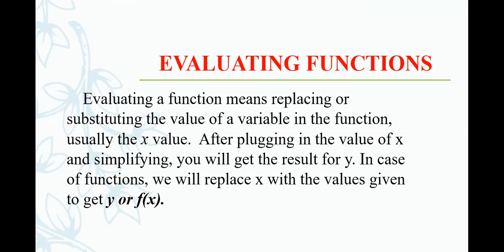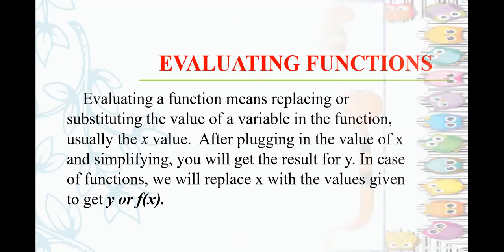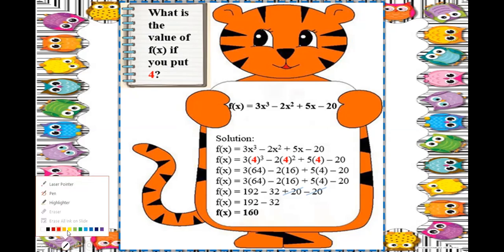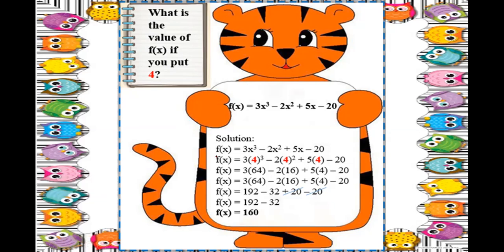In the case of a function, we replace x with the given values to get y or f of x. Let's have our first example: what is the value of f of x if you put 4? We have the equation f of x equals 3x cubed minus 2x squared plus 5x minus 20. Of course, you need to write the given first.